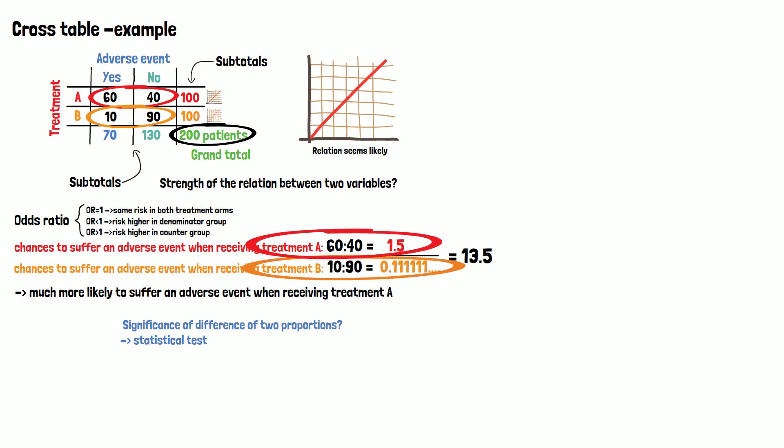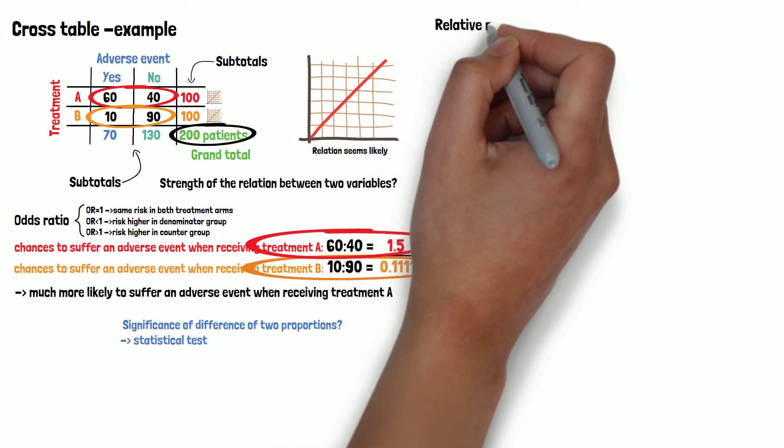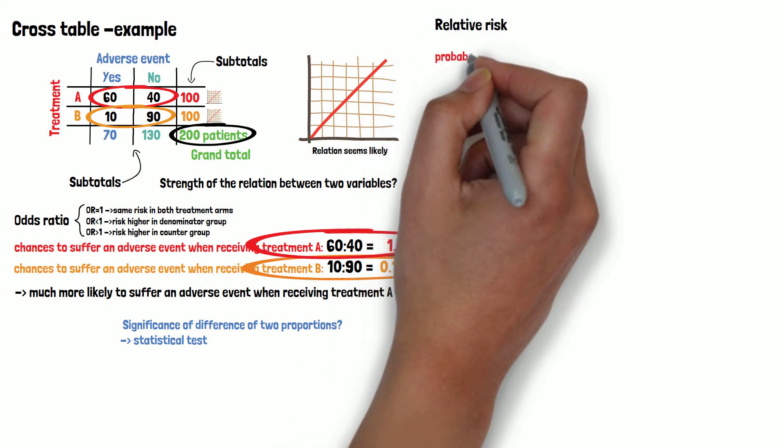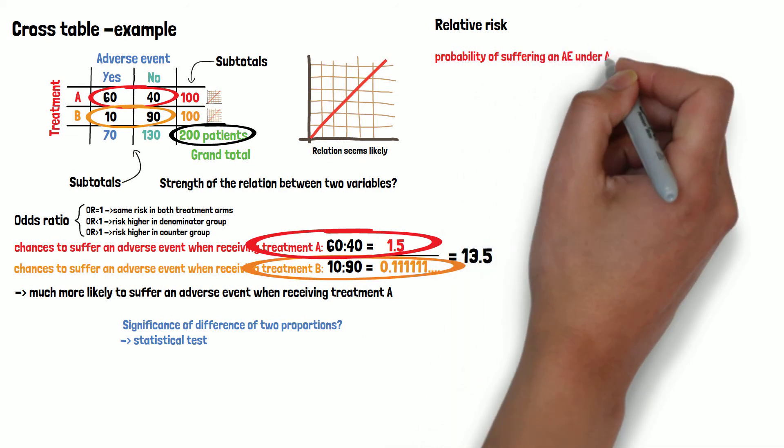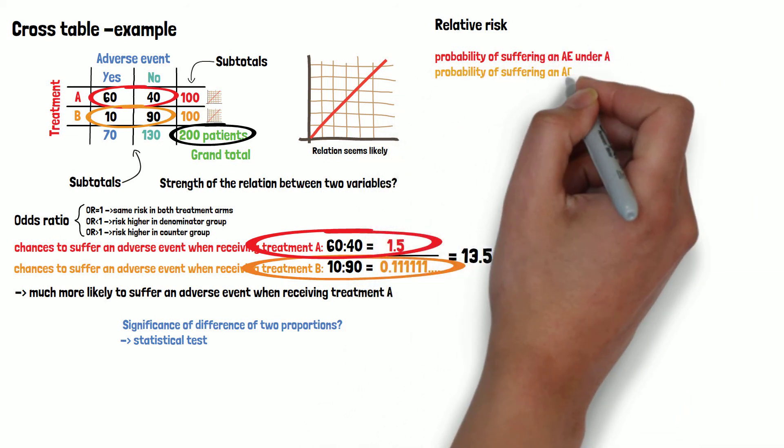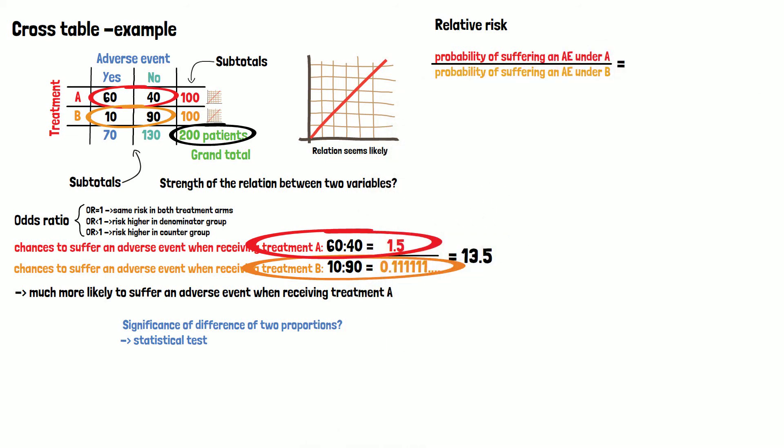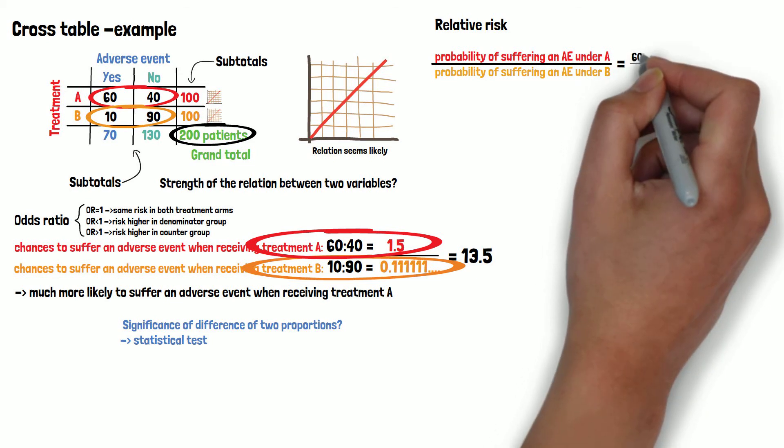Another way of measuring the relation between two variables is the relative risk or risk ratio. It is defined as the ratio between the probability of suffering an adverse event if you receive one treatment and that when receiving the other. In our example, this would be 60 of 100 divided by 10 of 100 equals 6.